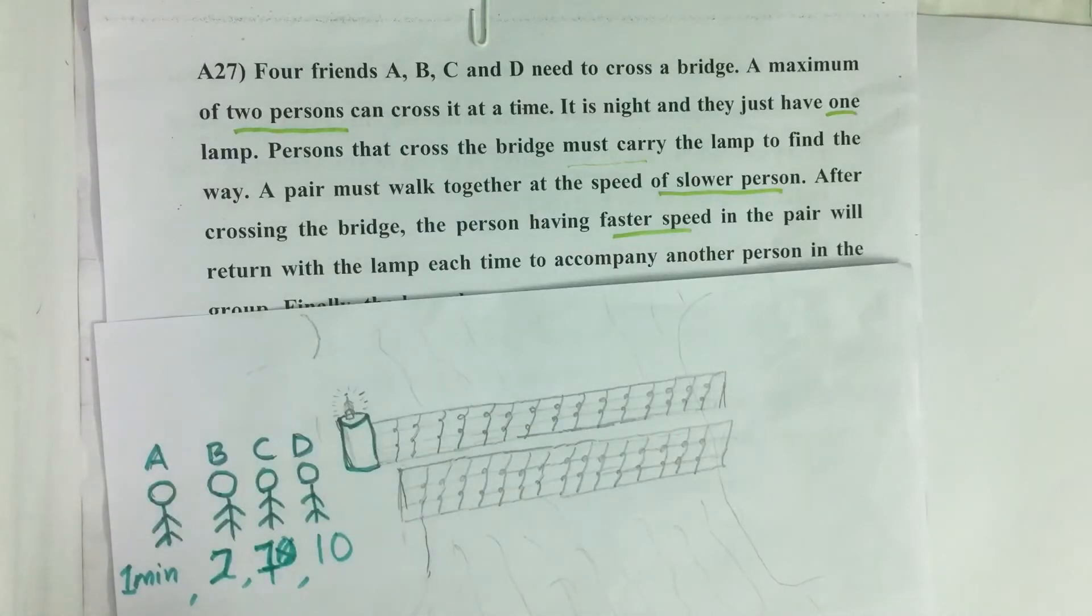Hello everyone, here I am going to solve 2016 CSAT question number 27 from question paper series A. Four friends A, B, C, and D need to cross a bridge.